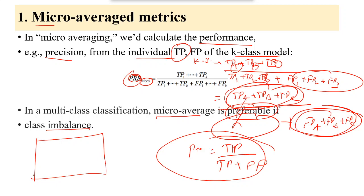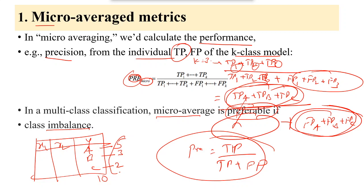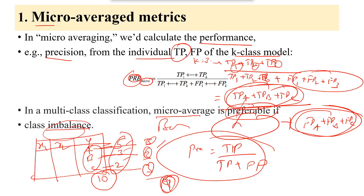Imbalanced means the classes have different numbers of instances — for example, Class A has 5 instances, Class B has 3, and Class C has 2 out of 10. In contrast, balanced data would have equal counts, like 3, 3, 3 out of 9. When the data is imbalanced, we use micro averaging.